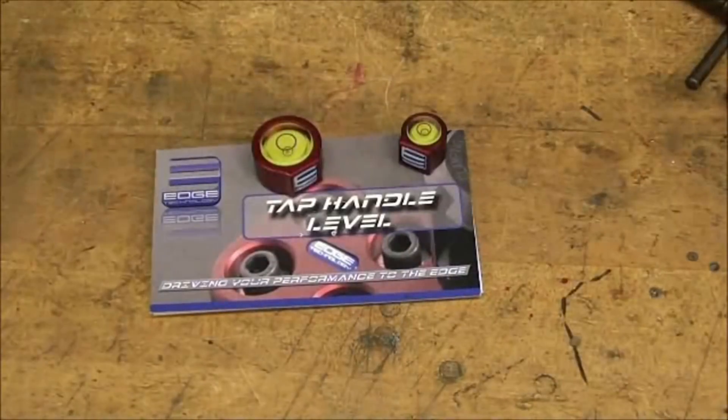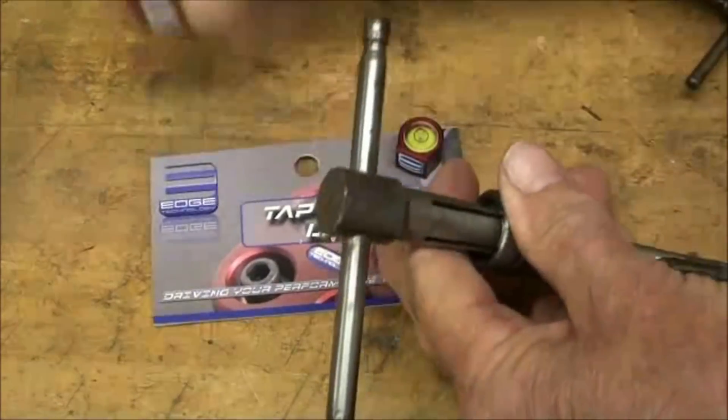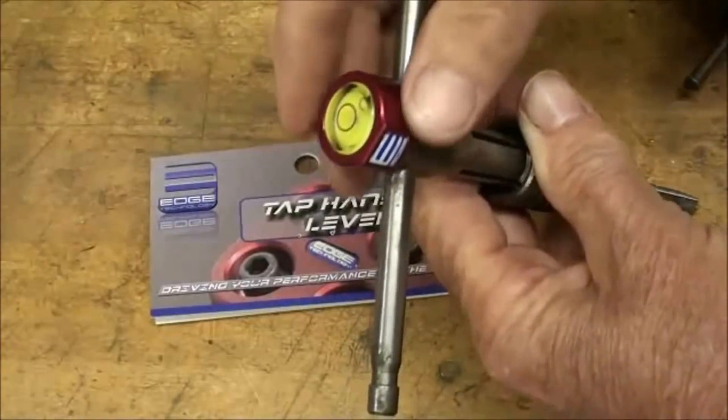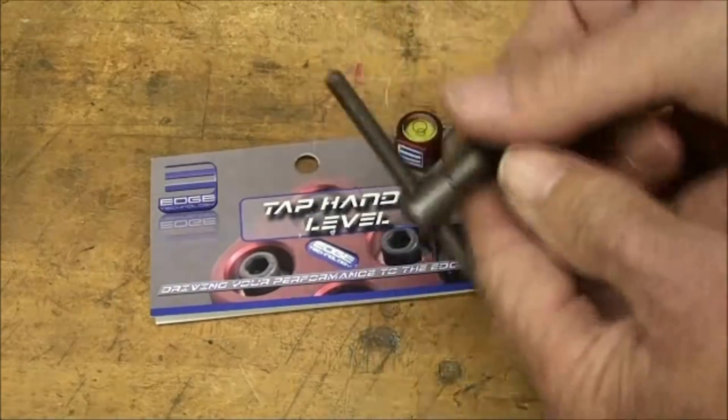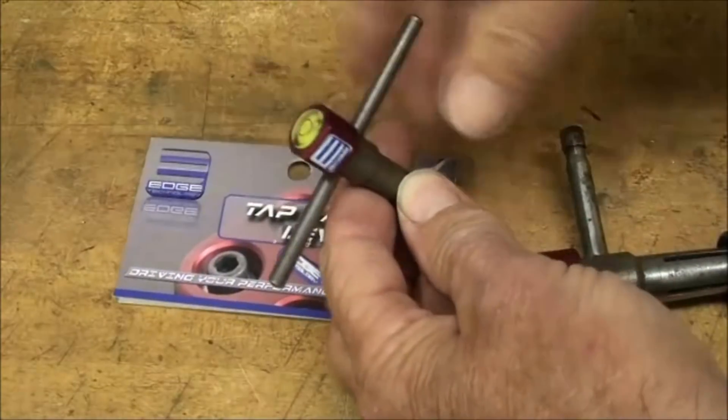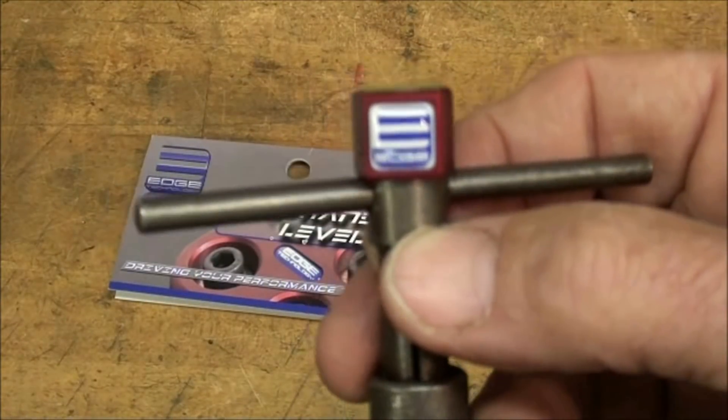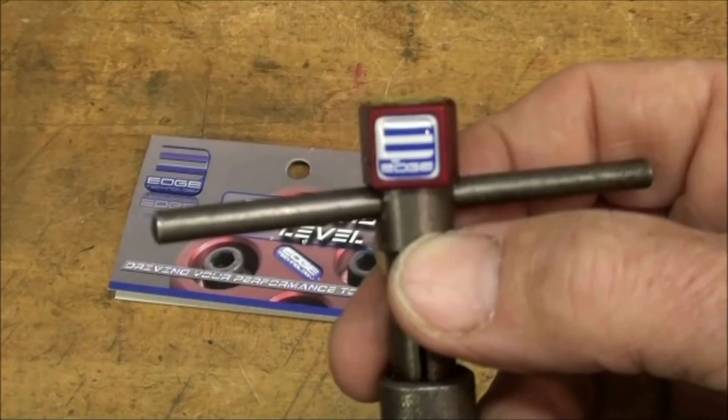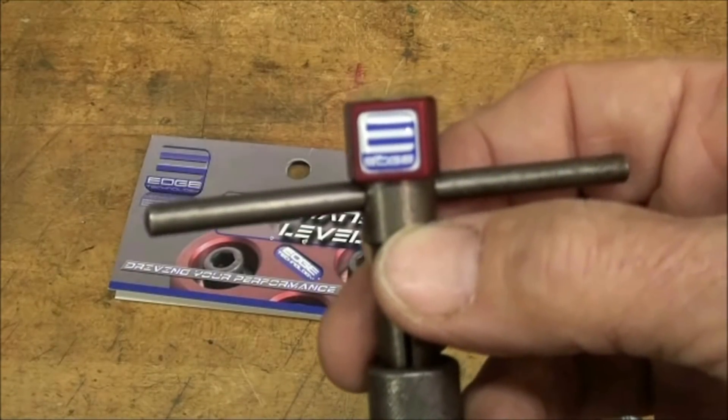And here is the set of bullseye levels. And they attach by a magnet right onto the tap wrench. And there's a smaller one for your smaller wrenches. And they've got the little logo on there. So let's take a look at how to use them.